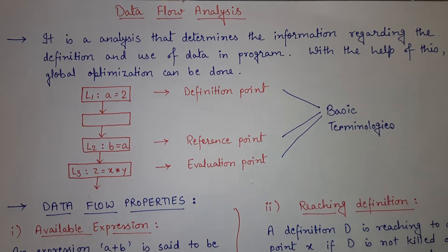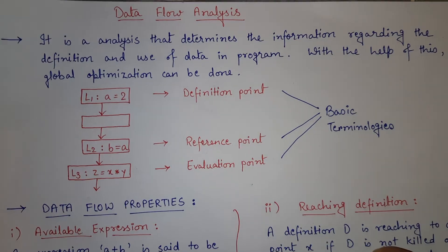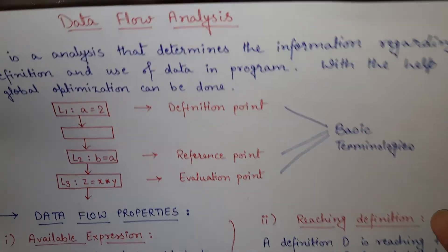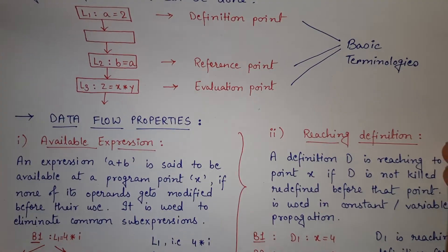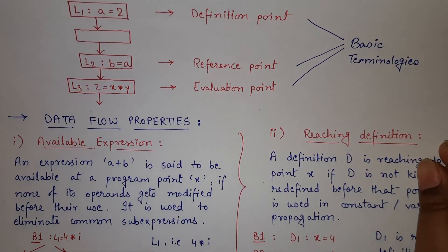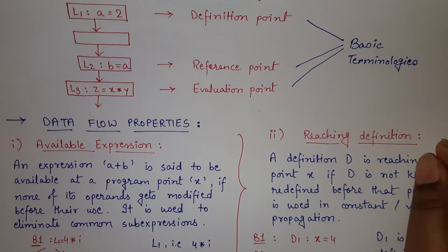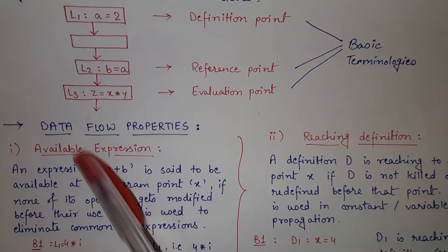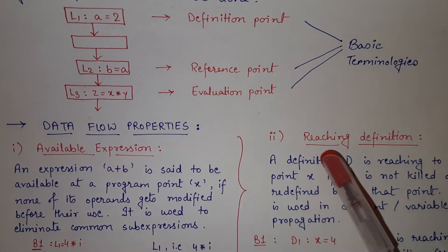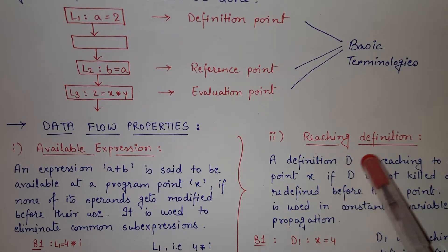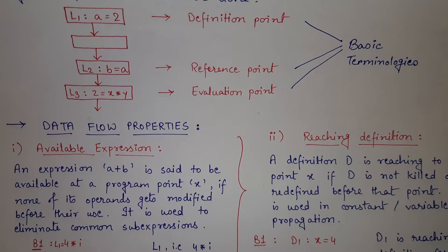Now we are having certain data flow properties. The two main data flow properties are available expression and reaching definition. Let's see what these two are with the help of examples.